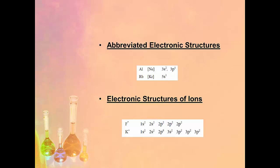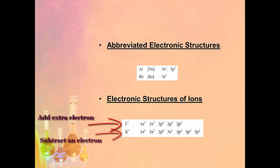Here are some abbreviated electronic structures. Aluminium can be written as [Ne] 3s², 3p¹ — putting neon in square brackets means we include the full electronic structure up to neon. Rubidium is written as [Kr] 5s¹ — electronic structure all the way up to krypton and then 5s¹. Electronic structures of ions are done exactly the same way, but if the ion has a negative charge you add an extra electron, and if it has a positive charge you remove an electron.